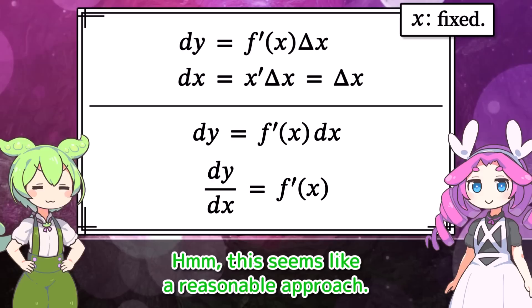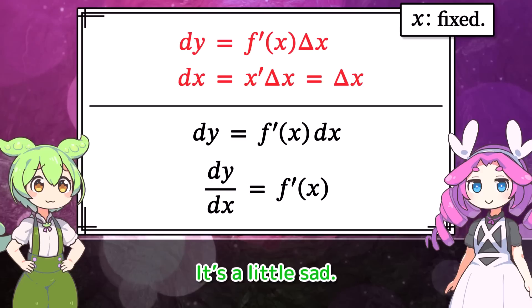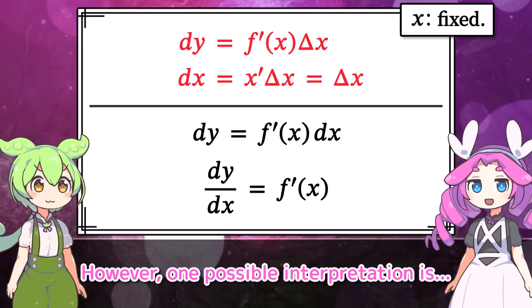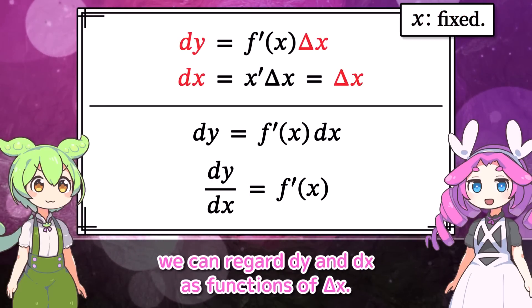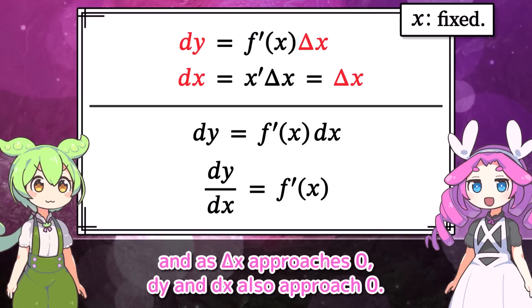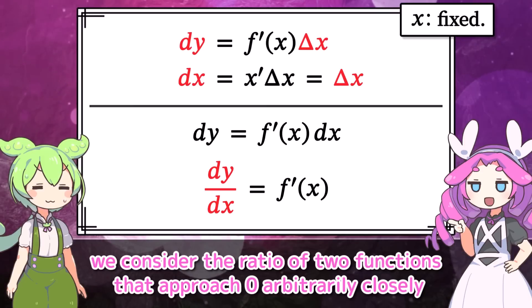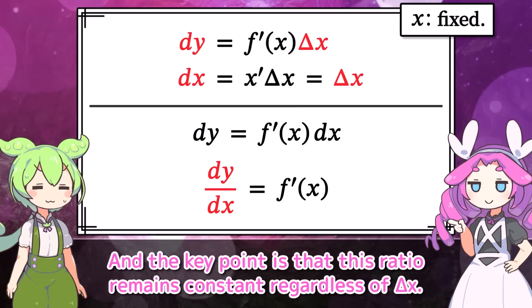This seems like a reasonable approach. The principal part of a small change — I see. But still, delta x is not an infinitesimal; it's just a real number. So dy and dx are not infinitesimals either. However, one possible interpretation is: since we are keeping x fixed, we can regard dy and dx as functions of delta x. Here, delta x represents the change measured from x. As delta x approaches 0, dy and dx also approach 0. In other words, instead of considering the ratio of two infinitesimals at x, we consider the ratio of two functions that approach 0 arbitrarily closely as delta x approaches 0. The key point is that this ratio remains constant regardless of delta x.